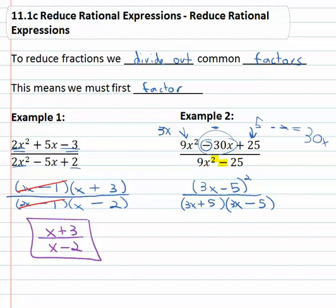Now looking for a common factor we see 3x minus 5 in both top and bottom, remember there's two of them in the numerator. So if we divide one out we're left with one remaining in the numerator. And so for our final answer we have 3x minus 5 over 3x plus 5 and we're done.